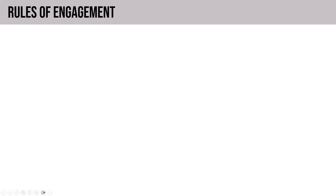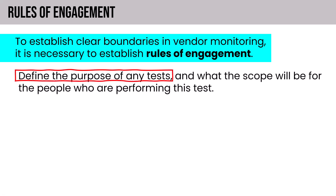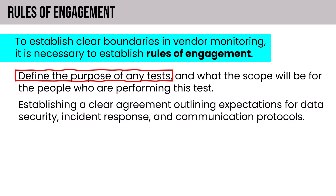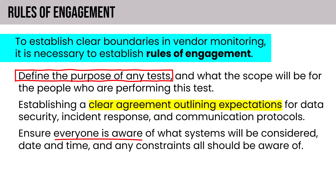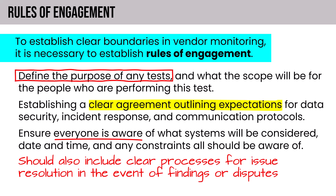Rules of engagement establish clear boundaries for vendor monitoring and management. Define the purpose of any tests and their scope, establish a clear agreement outlining expectations for data security, incident response, and communication protocols. A communication plan should specify the medium, audience, and intervals. Ensure everyone is aware of which systems will be considered, dates, times, and constraints. Include clear processes for issue resolution in the event of findings or disputes. Rules of engagement can apply to penetration tests or ongoing vendor monitoring — and if a vendor knows they are being continuously monitored, it encourages good behavior and compliance.